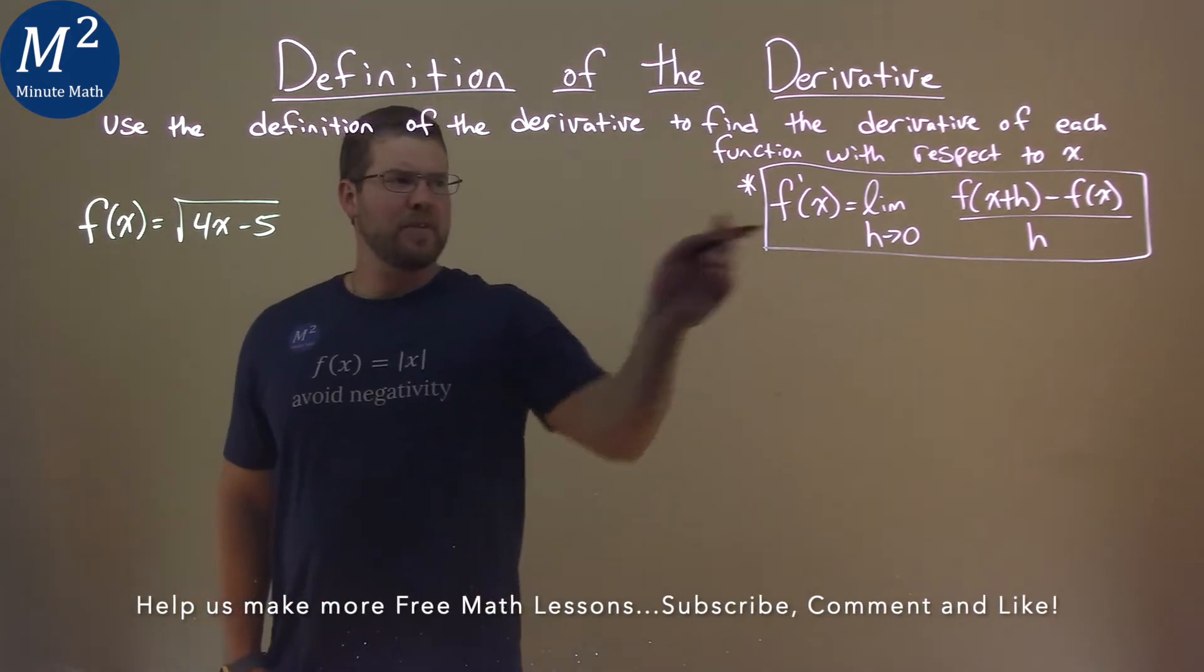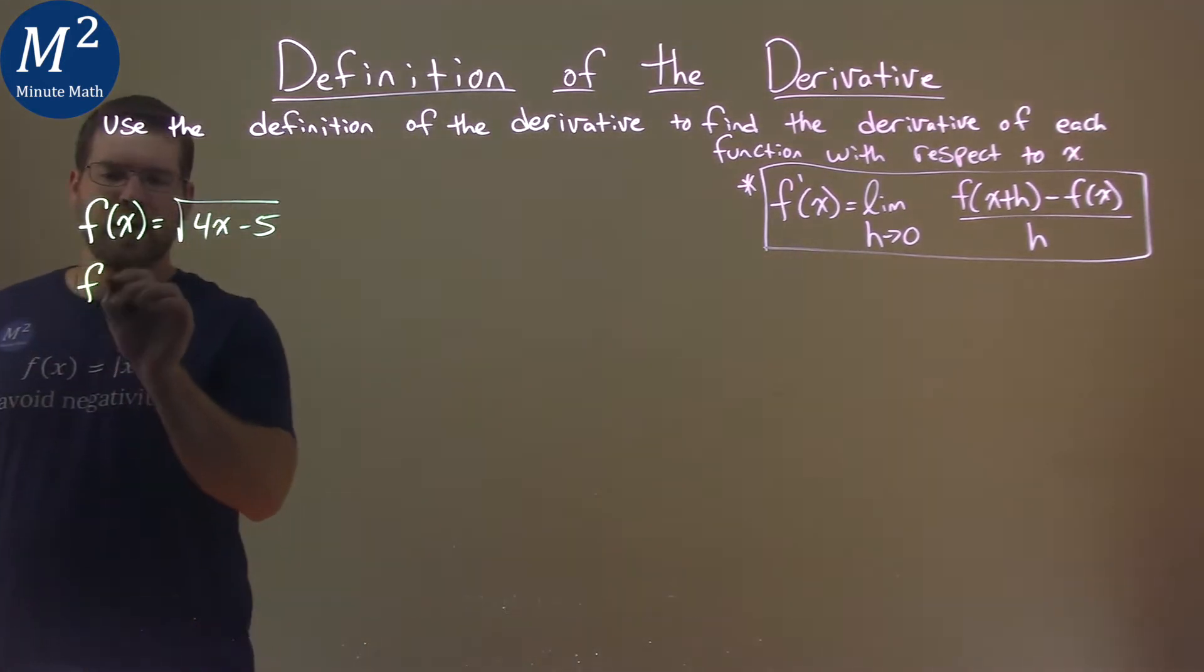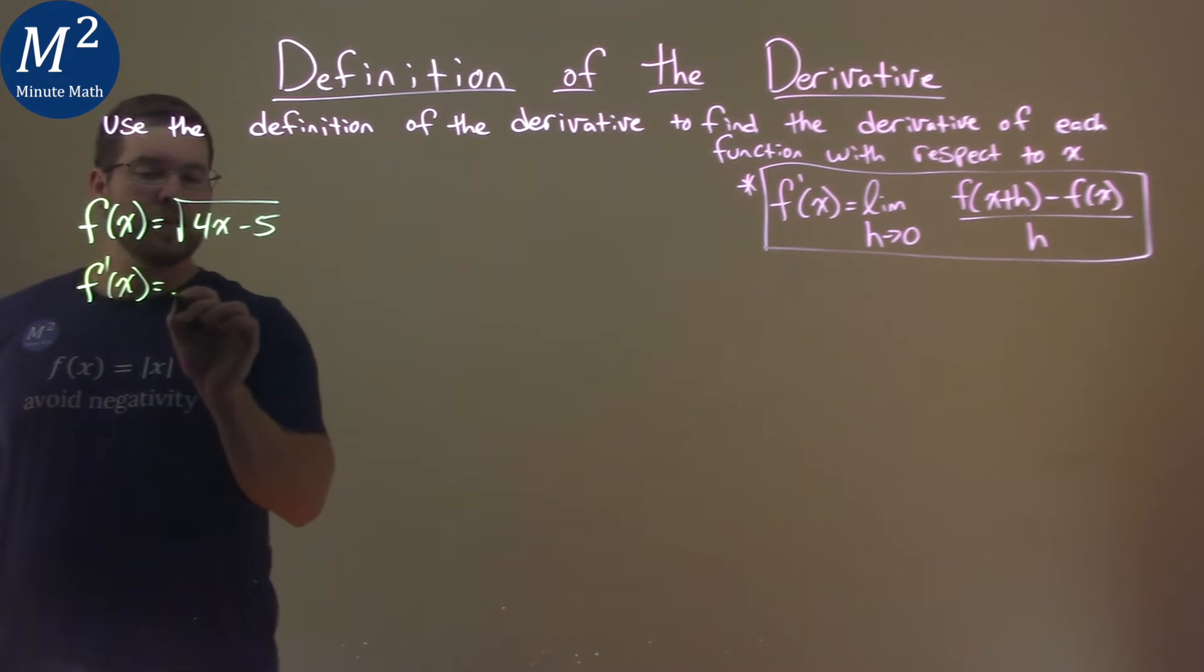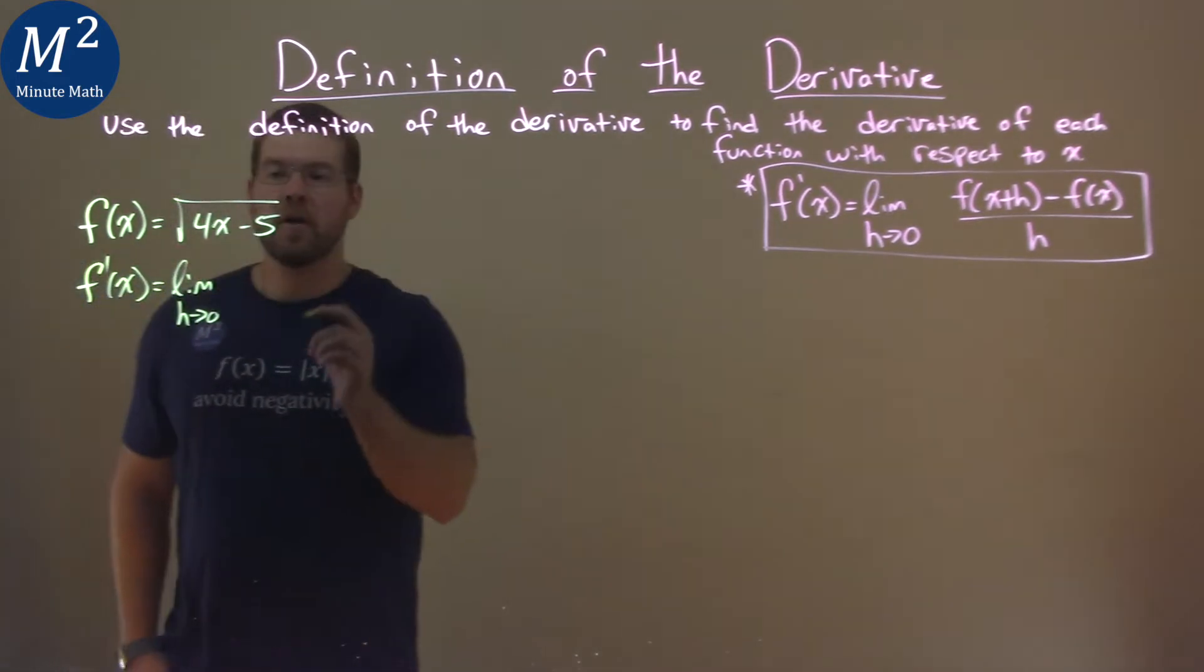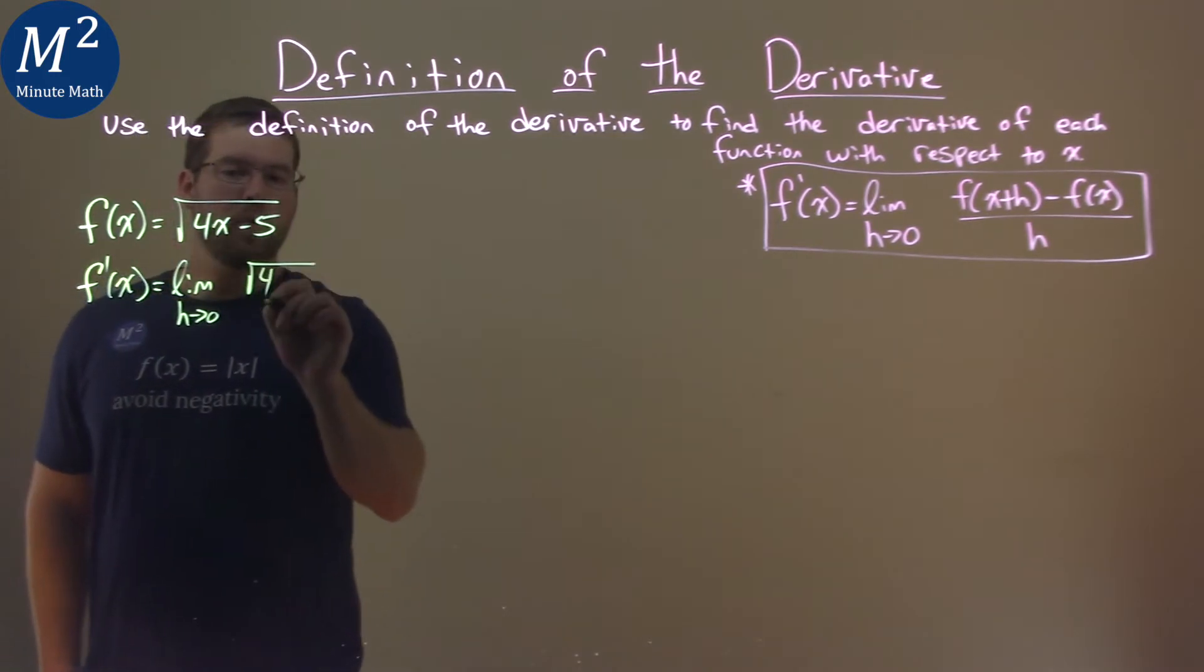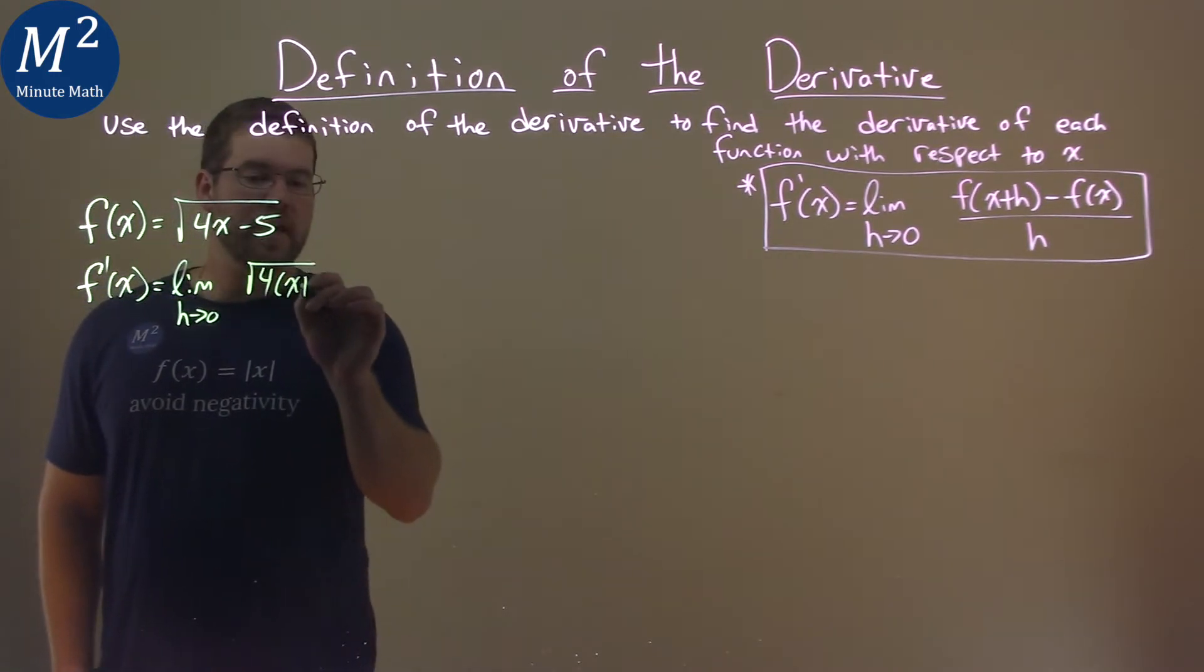Now, we have our definition right here. We have to find our f'(x), and it's equal to the limit as h approaches 0 of our function right here, the square root of 4, but instead of x, put an x plus h in.